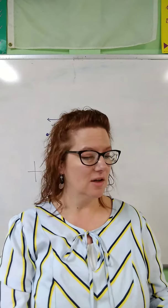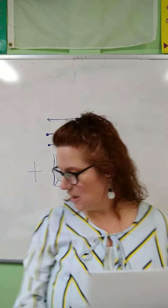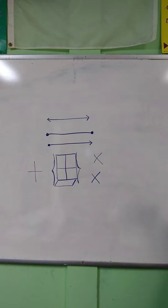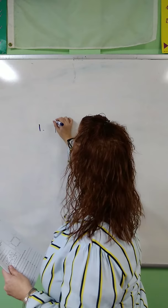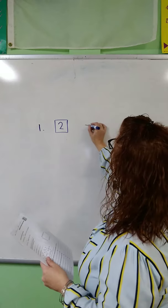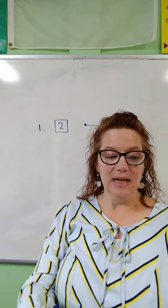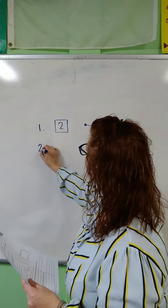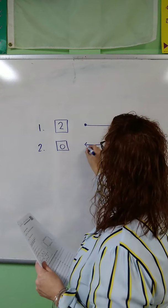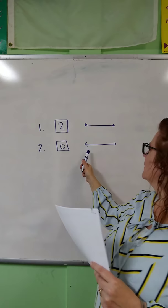If you look at the top of your paper, Grace, it says complete each sentence and draw the figures. The first one says a line segment has blank end points — the answer is two. Put the number two in that box, then draw a line segment with little dots on either end. Number two says a line has blank end points — a regular line has zero end points, with arrows on both sides to show it keeps going in both directions.